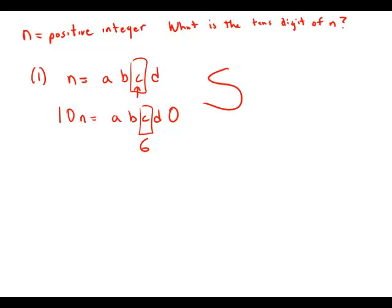Now forget about that. Focus on statement number two. Statement number two says that if we look at n plus one, then what we get is a tens digit of seven. So we have a, b, 7, d.